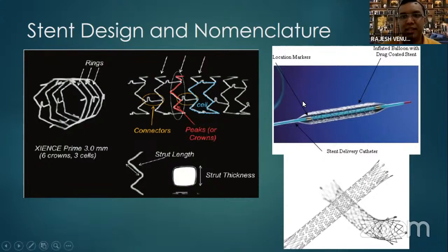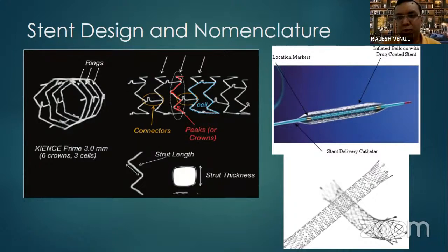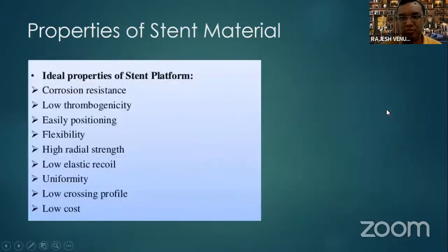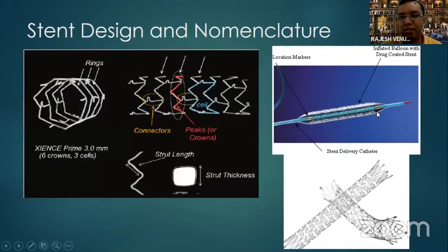This picture shows how a balloon-expandable stent works — the balloon sits inside the stent. Once the balloon is inflated with contrast, the stent expands and contacts the vessel wall. Once the balloon is deflated, the stent remains in position due to its tensile strength, and the balloon can then be deflated and removed.